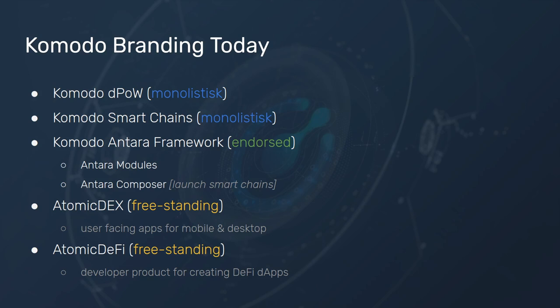Then we have the Antara framework, which is an ICS-endorsed product brand because we are using a different logo and it kind of talks independently. Underneath it we have Antara modules, Antara Composure, and so on. For the user side we have Atomic Dex — this is currently freestanding, with a very loose connection to Komodo. Although people generally know that it's from Komodo, it's not really promoted that way in our branding.